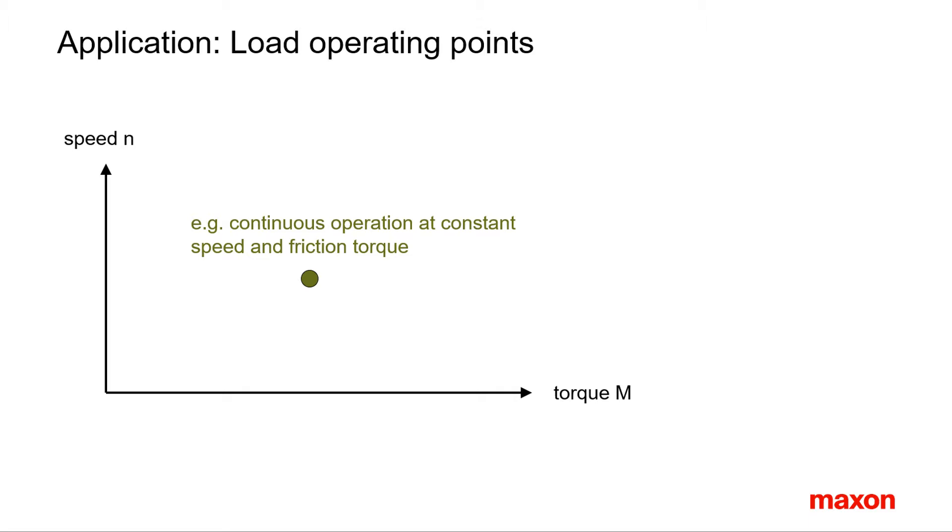In our standard diagram with motor speed as a function of torque this can be represented as points of operation. For example, there can be a constant operation at the given torque and speed.